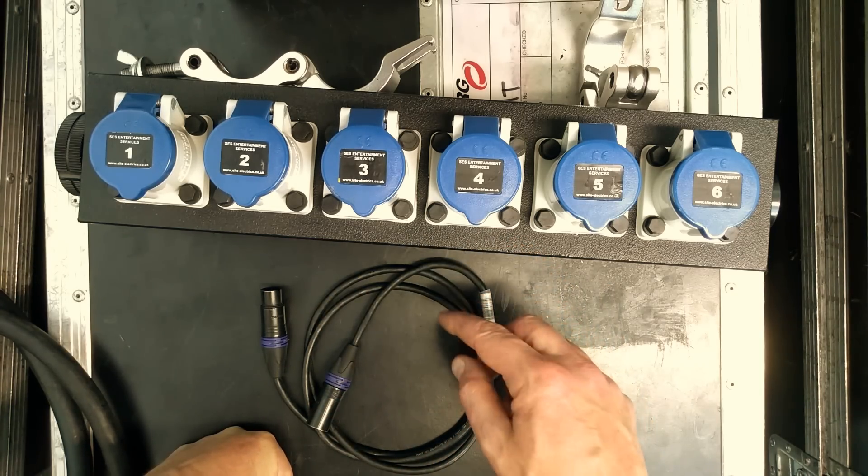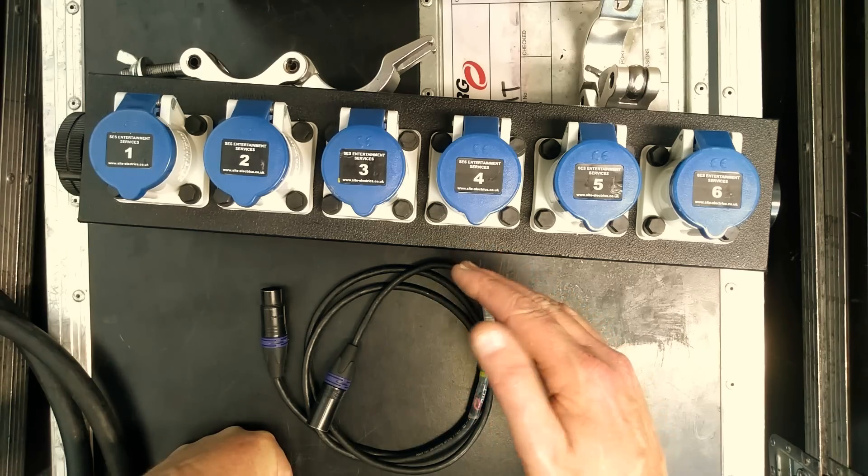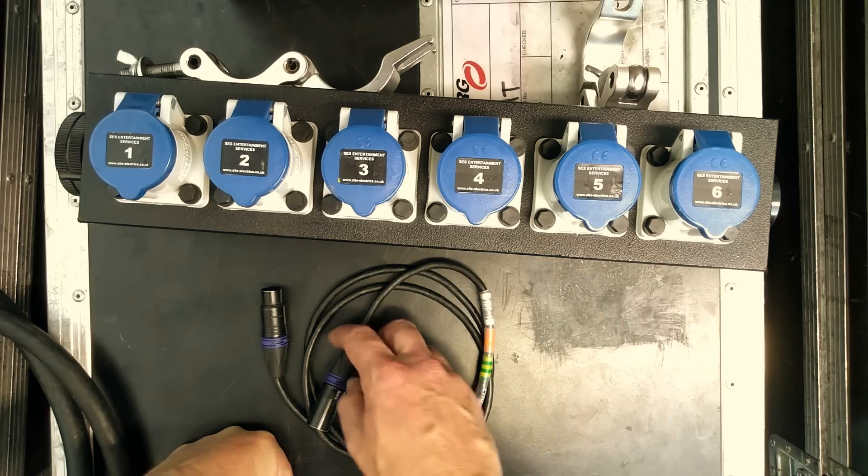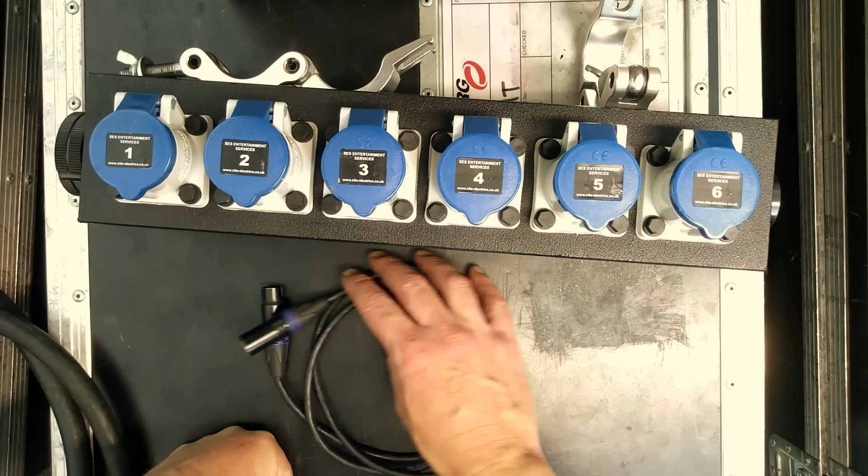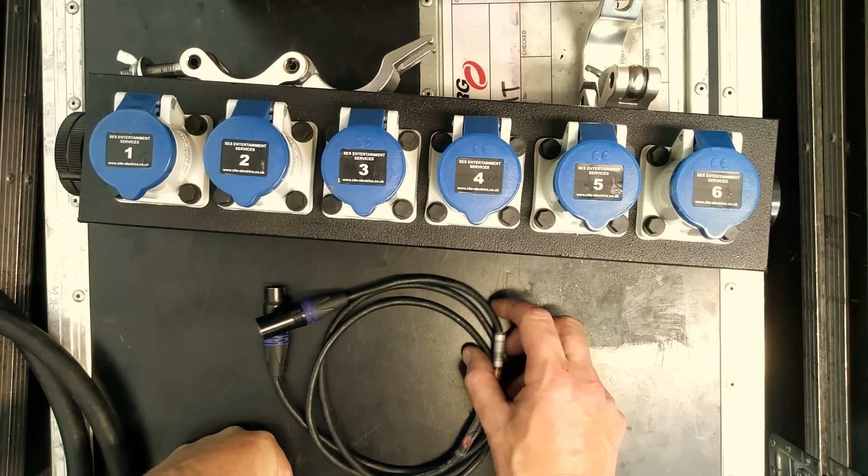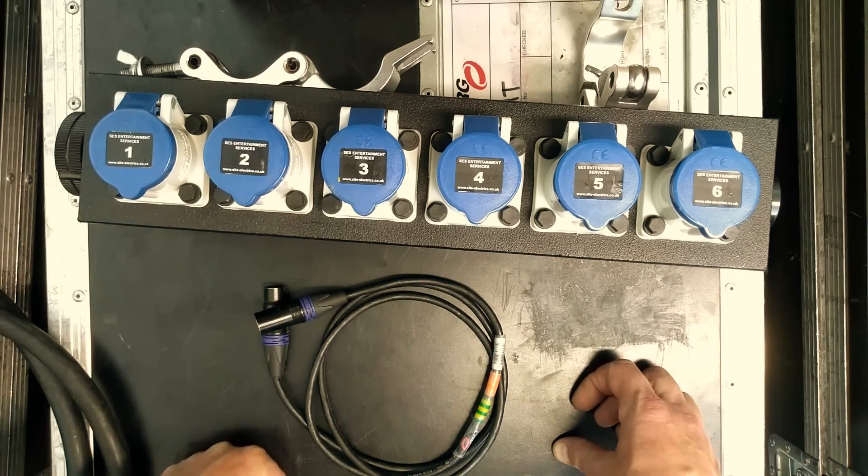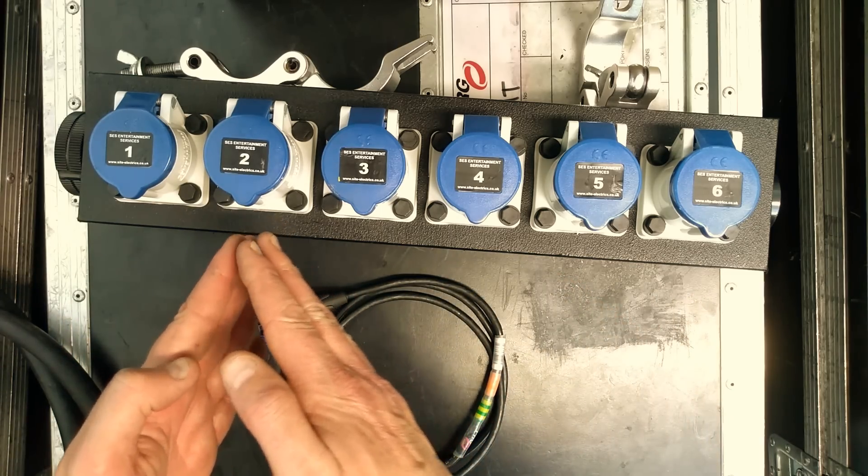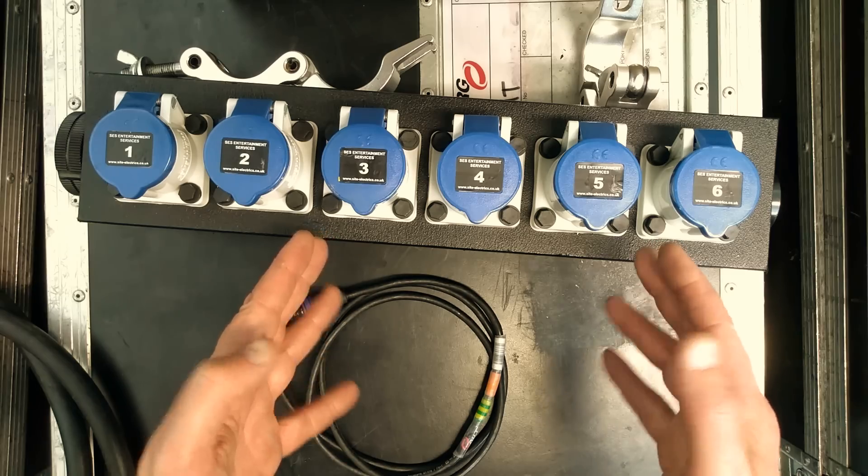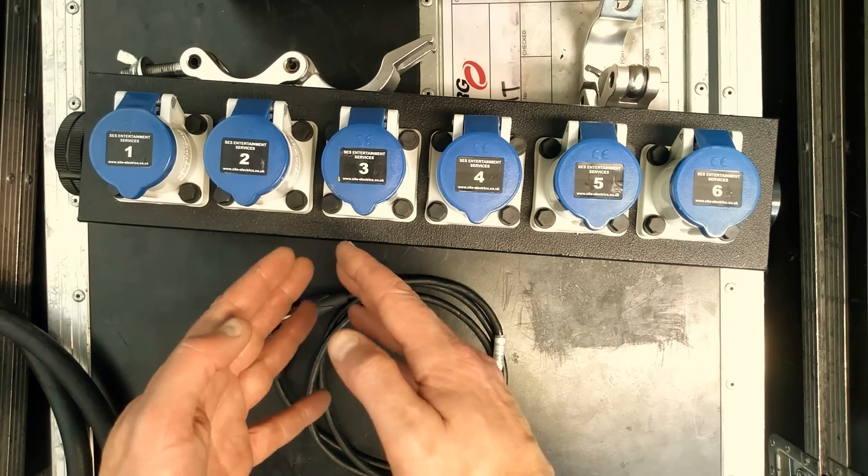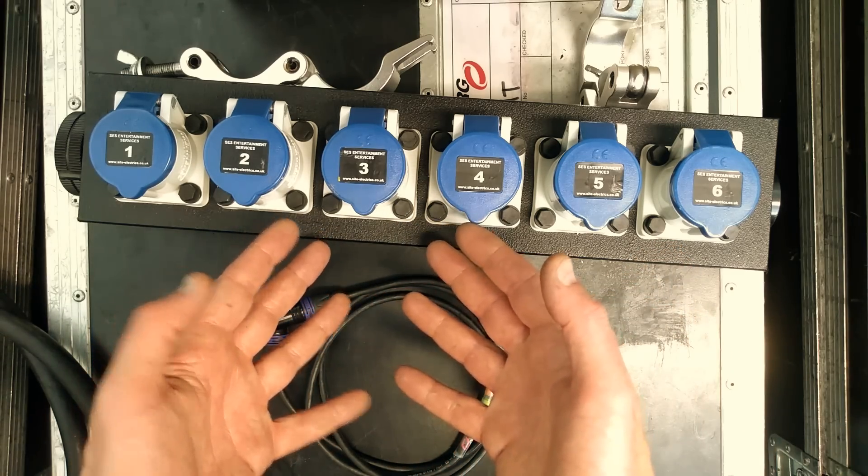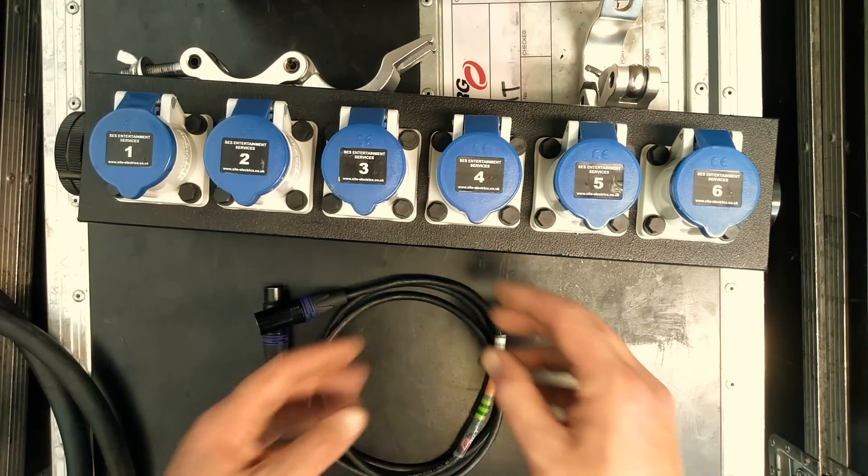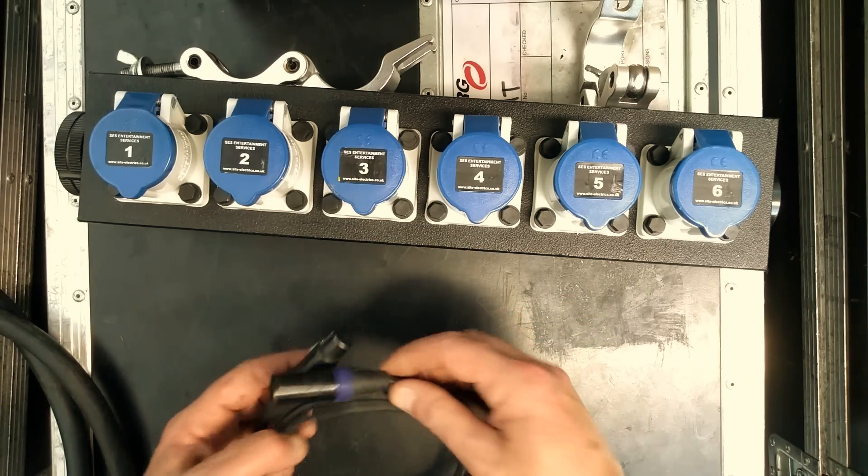And with multiplexing, they originally introduced a standard called D54, which was analogue still, but it was a sort of stream of analogue levels with synchronisation pulses and you basically, whatever channel your dimmer was set to, it would sample that analogue pulse as it came through the sampled analogue voltage. But that was quickly replaced by DMX 512.